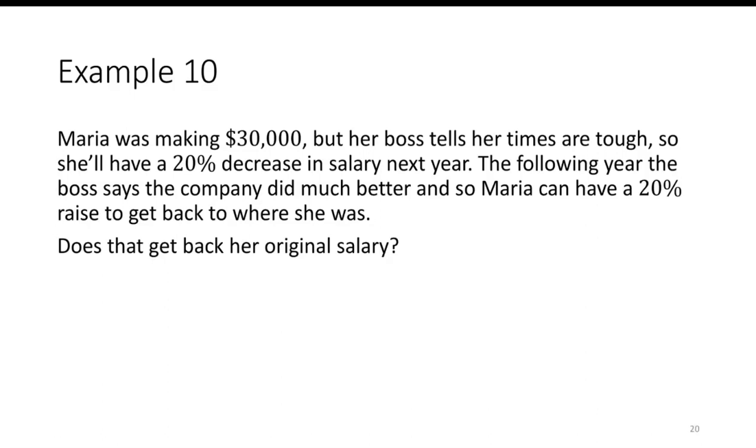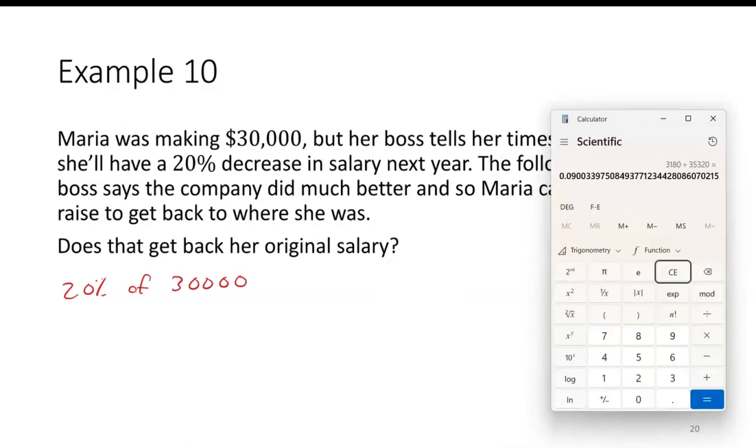Does she get back to the original salary? Well, let's start with the 20% decrease. So we're doing 20% of her salary at the time was $30,000. So that would be 0.2 times 30,000. And then that's $6,000.